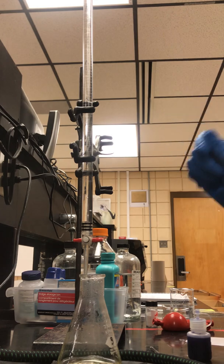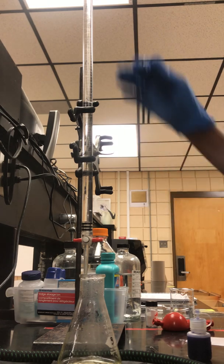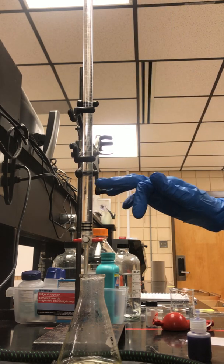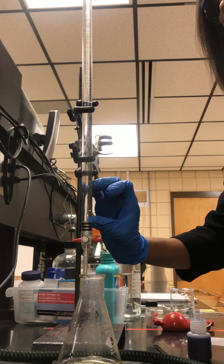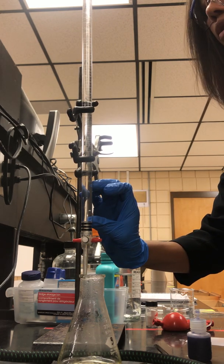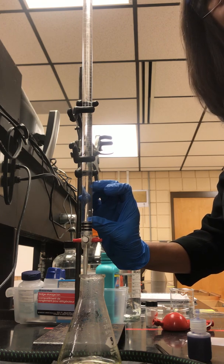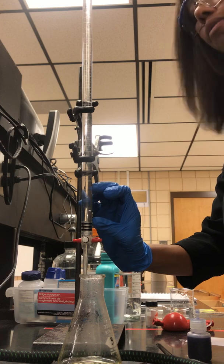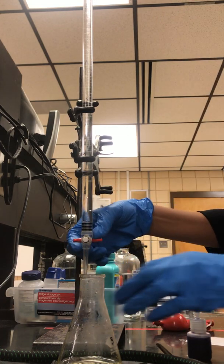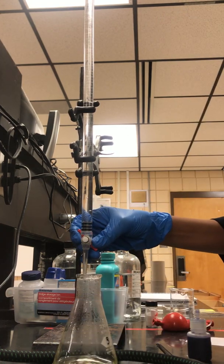Read the burette and record my initial volume. Remember it starts at zero and if you come to the bottom it ends at 50. You have this space where you do not have any graduations, so carefully watch that you don't come into this area or you'll have to repeat that titration.